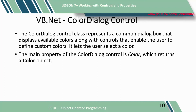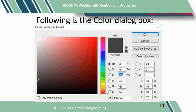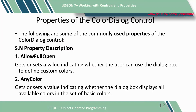Visual Basic.Net Color Dialog Control. The color dialog control class represents a common dialog box that displays available colors, along with controls that enable the user to define custom colors. It lets the user select a color. The main property of the color dialog control is color, which returns a color object. This is an example of a color dialog box. You can select a color by selecting it or by typing the hexadecimal number of the color.